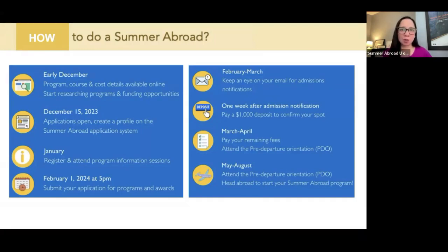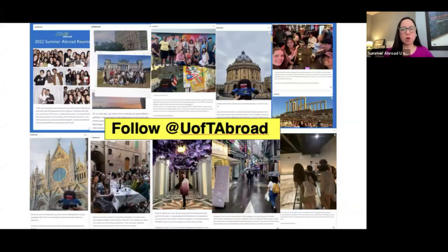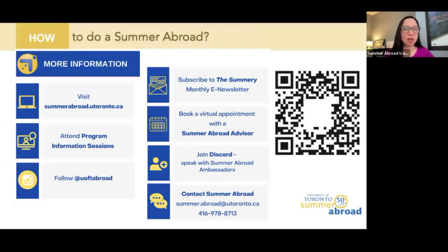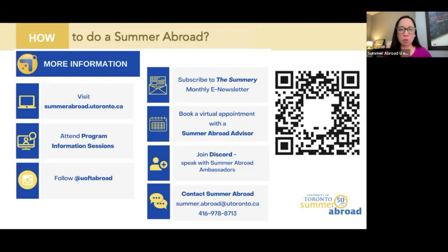A short timeline: you're right here in January attending program information sessions. Video recordings of other sessions will be on our website. The application deadline is February 1st at 5pm. Keep an eye on your email for admissions notifications in late February or early March. If admitted, you pay a $1,000 deposit, then remaining fees by March 27th. We'll also organize a detailed pre-departure orientation where you'll meet your classmates, hear from Professor Thompson, and learn about safety abroad. For those on Instagram, follow us at U of T Abroad. We also have a monthly e-newsletter, virtual appointment booking, and a Discord group where Summer Abroad Student Ambassadors meet every Monday at 11am.